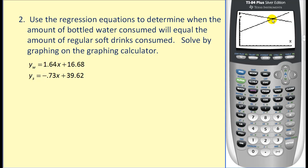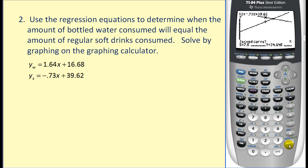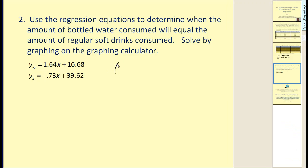The coordinates of this intersection point represent the solution. Let's go ahead and calculate that. If we press SECOND TRACE, which is the calculation menu, option 5 for intersection, then ENTER three times, we get the X value and the Y value of the solution. Recording this using two decimal places: the X value was 9.67 and the Y value was 32.55.